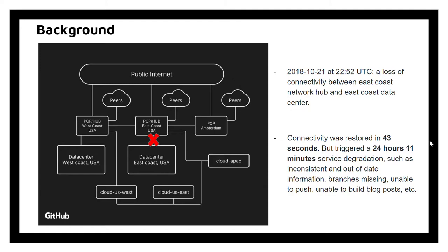On the date of the incident at around 11 p.m., there was a loss of connectivity between the East Coast Network Hub and East Coast Data Center. The connectivity was restored within 43 seconds, but it triggered a chain of events and eventually led to 24 hours and 11 minutes of service degradation.